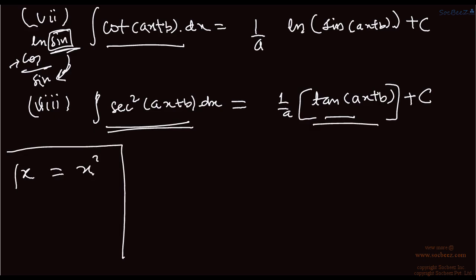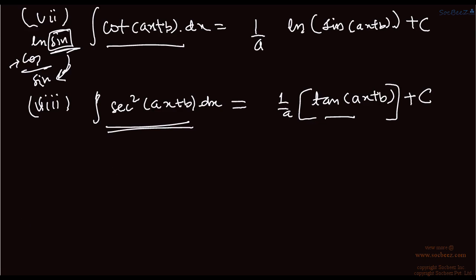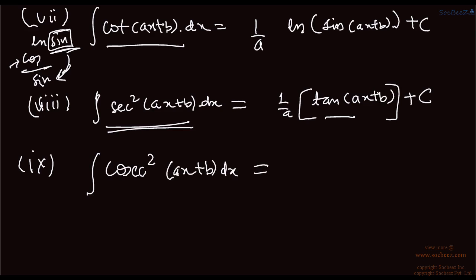For example, integration of x is x squared by 2 and differentiation of x squared by 2 is x. Integration and differentiation are inverse operations. The ninth formula: the integral of cosec²(ax + b) dx equals minus 1/a times cot(ax + b) plus c. There is a negative sign because we are dealing with cosec squared.